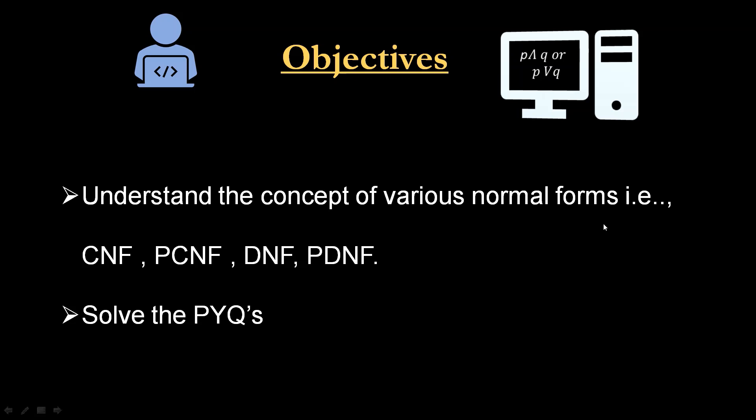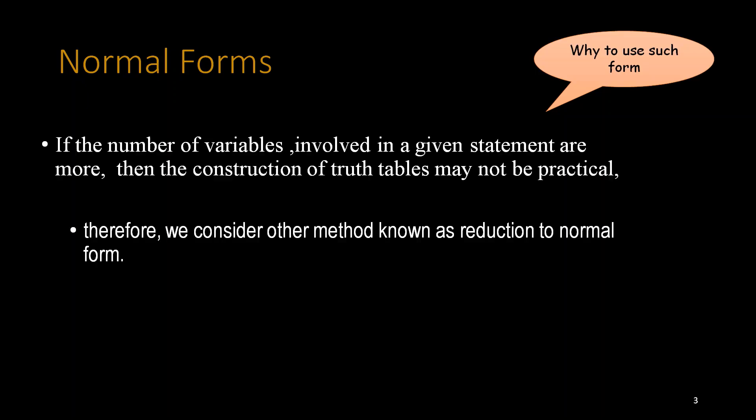Basically solve the previous year questions. We have read previous year questions, so how to solve those. Why do we use such form? If the number of variables involved in a given statement are more, then the construction of truth tables will not be practical. If you have two or three then you can make truth tables, but if there are many, then it's not practically possible.